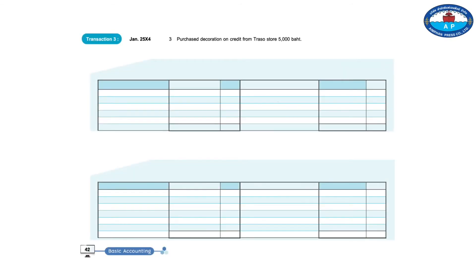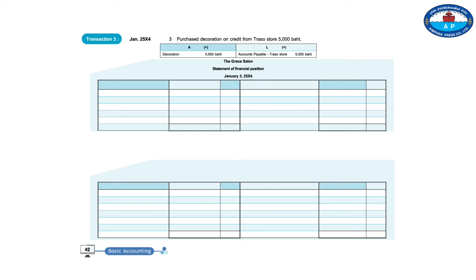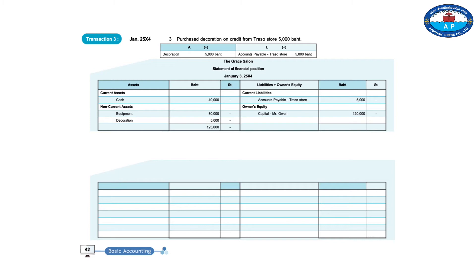Transaction 3, January 3, 2554: Purchased decoration on credit from the Trasso Store, 5,000 baht. A plus L plus: Decoration 5,000 baht; Payable of Trasso Store 5,000 baht. The Grace Salon Statement of Financial Position, January 3, 2554 — Assets: Cash 40,000; Equipment 80,000; Decoration 5,000; Total 125,000. Liabilities plus Owner's Equity: Payable of Trasso Store 5,000; Capital of Mr. Owen 120,000; Total 125,000.